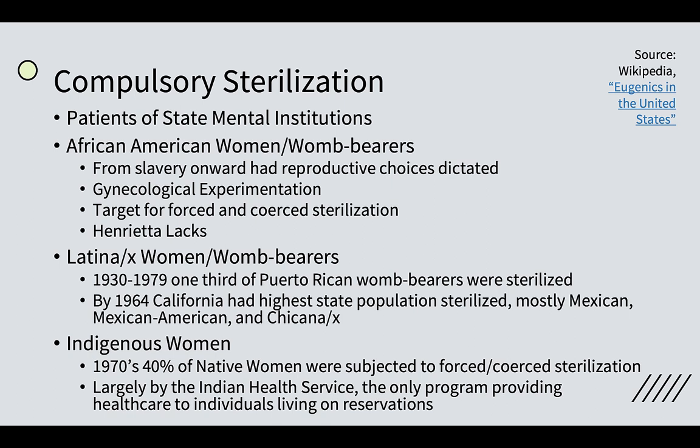In addition to gynecological experimentation, the whole population was targeted for coerced sterilization after the end of slavery — while enslaved, reproduction was controlled by white slave owners, and then after emancipation that was turned around to coerced sterilization to prevent that population from becoming larger and therefore more democratically powerful. Even modern cancer research benefits from this history: HeLa cells, the core of cancer studies, come from Henrietta Lacks, who was operated on without her consent. Latinx womb bearers dealt with this throughout the 20th century — all the way until 1979, a third of Puerto Rican womb bearers were sterilized.